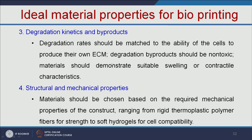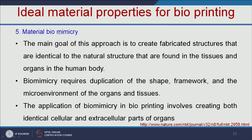The fourth property is structural and mechanical properties — the material should be selected based on the required mechanical properties of the construct. It can range from rigid thermoplastic polymer fibers for strength to soft hydrogels for cell compatibility, depending on the organ being printed. The fifth important property is material biomimicry. Biomimicry requires duplication of the shape, framework, and microenvironment of the particular organ and tissues. The application of biomimicry in bioprinting involves creating both identical cellular as well as extracellular parts of the organ, recreating the same environment.